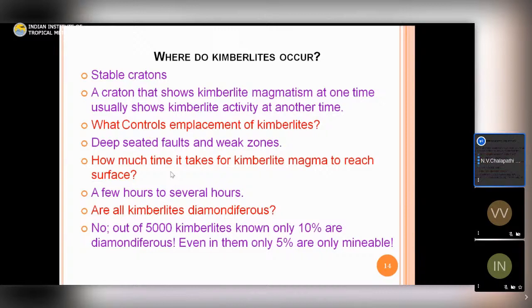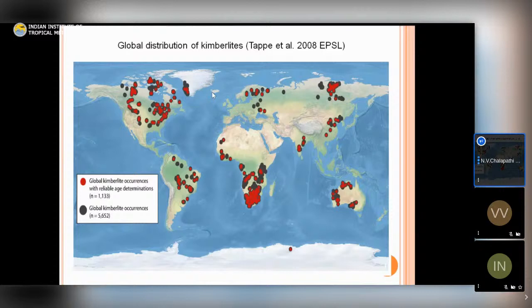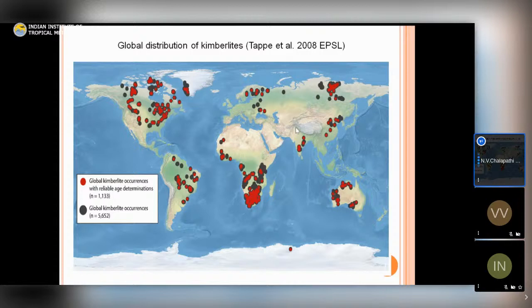Not all kimberlites are diamondiferous — of the 5,000 kimberlites known, only 10% are diamondiferous, and of those only 5% are mineable, but still worth exploring. A global map shows kimberlites are confined to ancient cratons. The Indian shield has plenty of kimberlites, South Africa is the type area. In England there are no kimberlites because there is no cratonic lithosphere. In the Himalayas no kimberlites are expected because the domain is much younger.